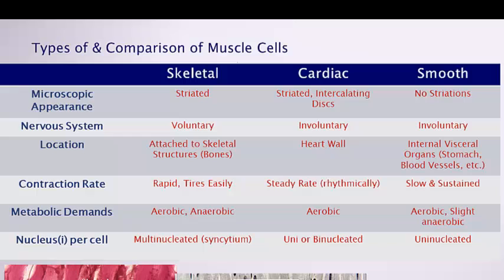Involuntary muscles beat without conscious thought, which is fortunate — if the heart relied on the voluntary nervous system, an absent-minded person would forget to make it beat. An advantage of the voluntary nervous system is that skeletal muscles are served by highly myelinated, thick neurons, allowing them to contract very quickly and forcefully. Their limitation is how quickly energy can be replenished after contraction, so they tire easily.